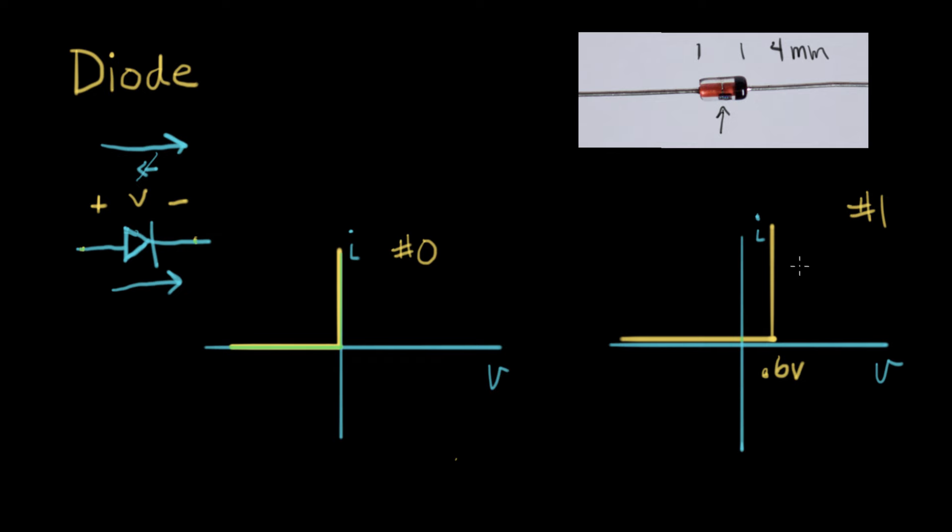Just as a reminder, when we had the IV curve of resistors, a resistor IV curve looks something like this. It was a line that went through zero and had a constant slope. So a diode is a really different kind of device. It's a non-linear device, as we can see from this.